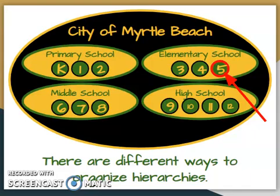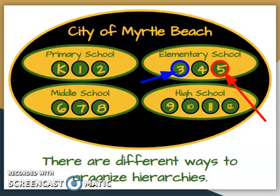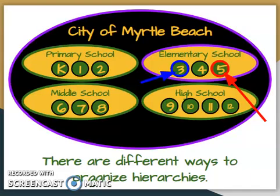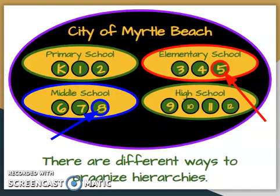If I wanted another way to classify a fifth grader, look what circle they're in — the elementary school — so we can also say they're an elementary student. And if you look at the biggest circle, we can also say they're a citizen of the city of Myrtle Beach. A third grade sibling can't be said to be in the same grade, but they're both in the elementary school circle — both elementary students and both in the big circle. An eighth grade sibling has a different grade and a different school, but they're still in the same big circle — the city of Myrtle Beach. Parents or neighbors who don't attend school are also still living in the city of Myrtle Beach.